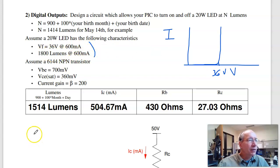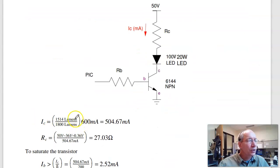Current is proportional to light. If you want the light level to be something different based on your birth date, then the current will be proportional. So the current is that proportion of full brightness. Full brightness is 600 milliamps. I want 504 milliamps.